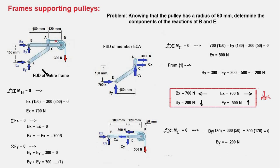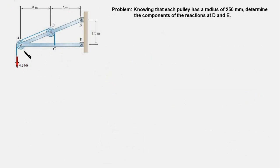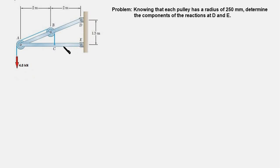We shall now move to another problem, which is slightly more complicated. Here, two pulleys are mounted on the frame at points A and B, and we have to find the reaction forces at supports D and E. Drawing the FBD of the entire frame gives four unknowns — two reaction components at D and two at E. With only three equilibrium equations, we cannot solve all four. Nevertheless, let's solve as many as possible, then dismember the frame and draw the FBD of one member to find the remaining unknowns.